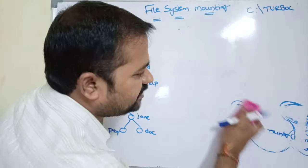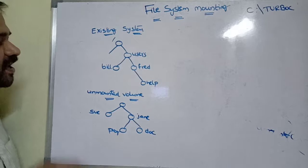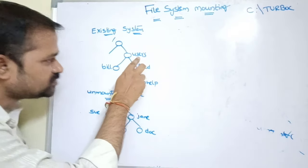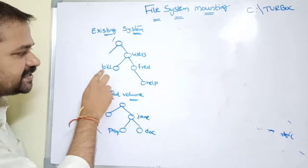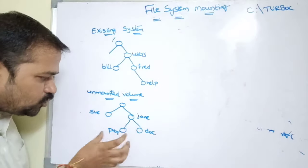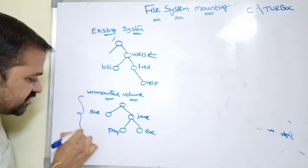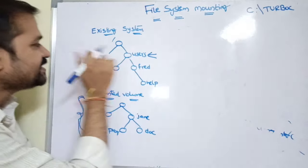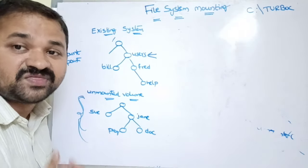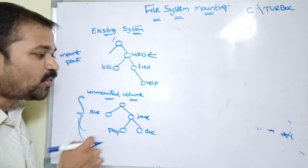Now let's take an example to get a clearer idea about mounting. We have a home directory, represented by a forward slash. This directory contains a subdirectory called users, and users contains two subdirectories: we and Fred. Fred contains a subdirectory called help. Our target is to attach a new directory structure at the users path. This point is known as the mount point — it specifies the location at which the file system is attached.